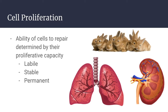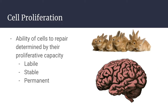Within stable tissues, cells have a minimal proliferative capacity in their normal states, but are capable of dividing in response to injury or loss of tissue mass. This comprises the parenchyma of most solid tissues like liver or kidneys, but also includes endothelial cells, fibroblasts, and smooth muscle cells found throughout the body. With the exception of the liver, stable tissues have a fairly limited ability to regrow. Permanent tissues are terminally differentiated and non-proliferative in postnatal life — things like neurons and cardiac muscle — and that's why injury to these organs is irreversible and typically creates a scar.